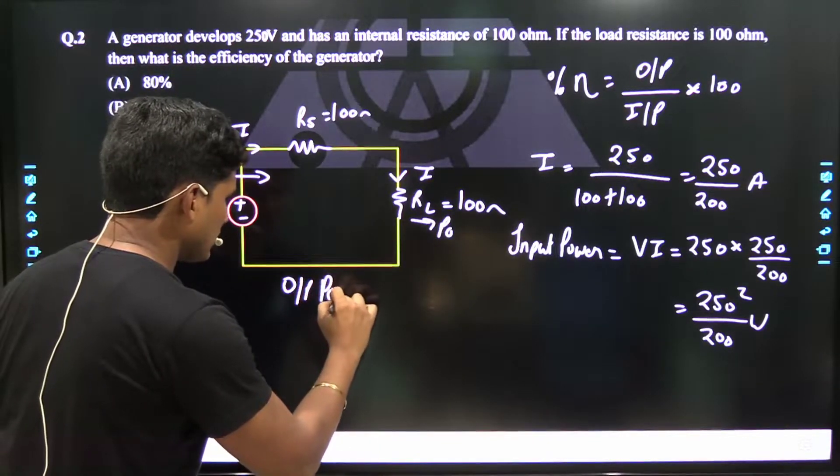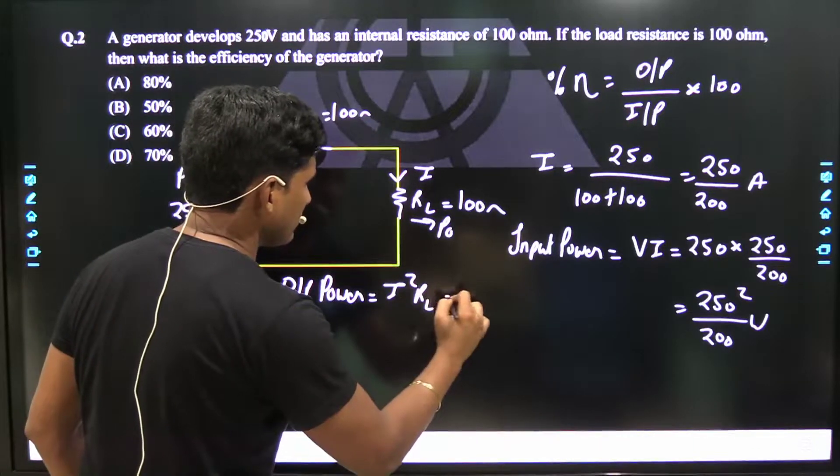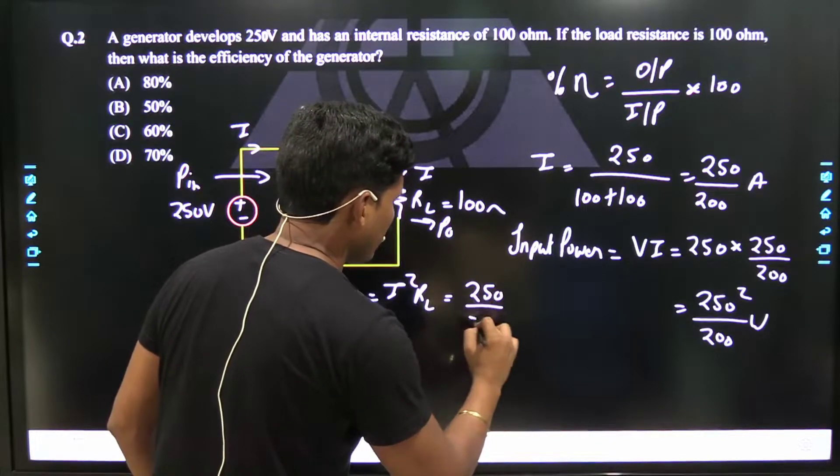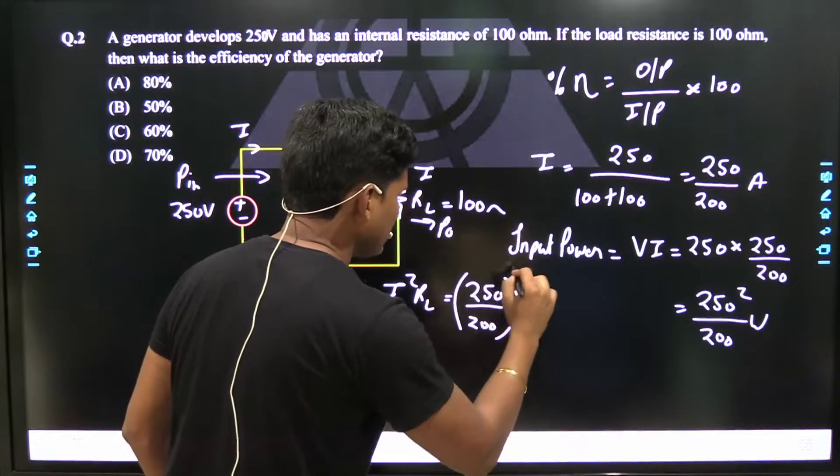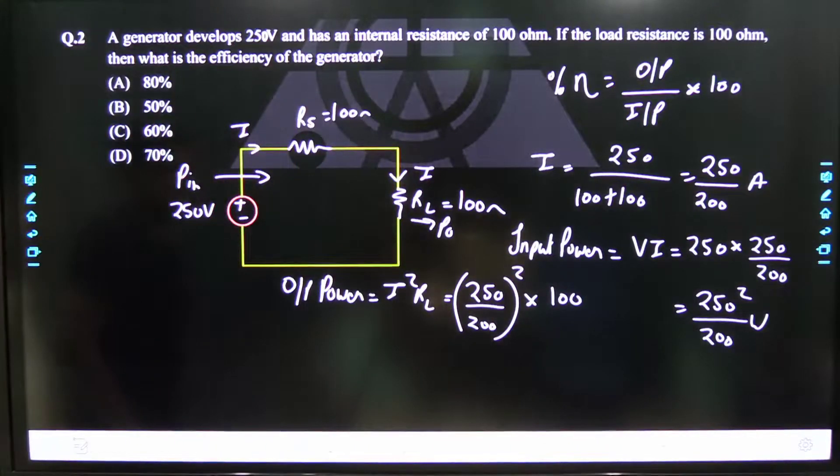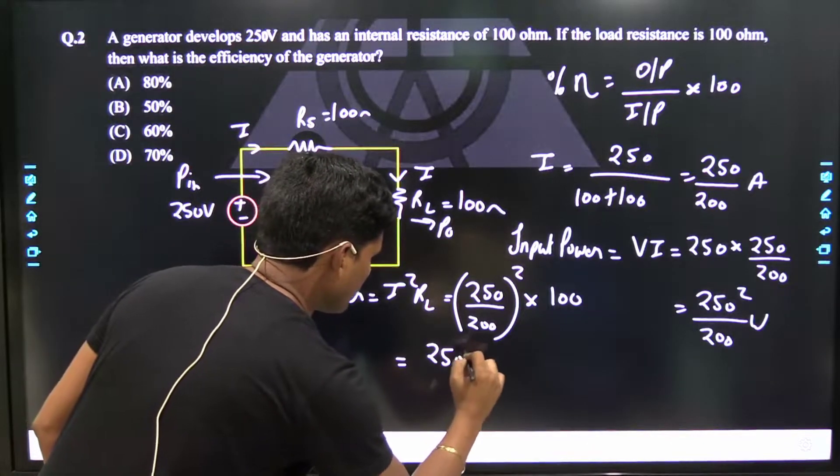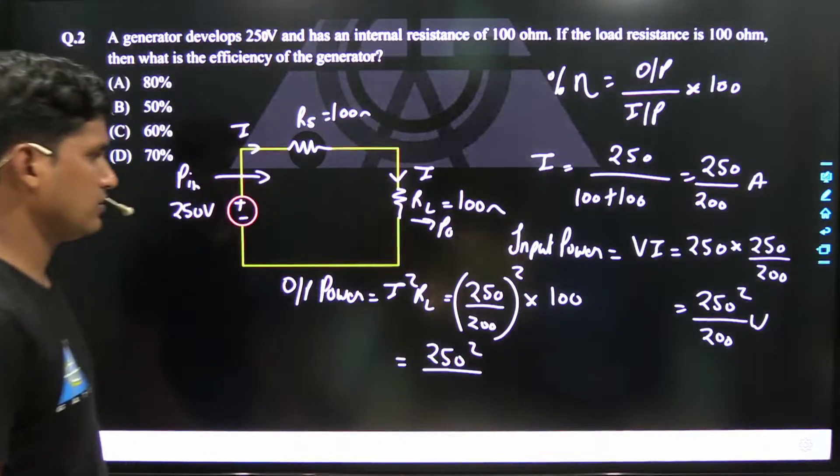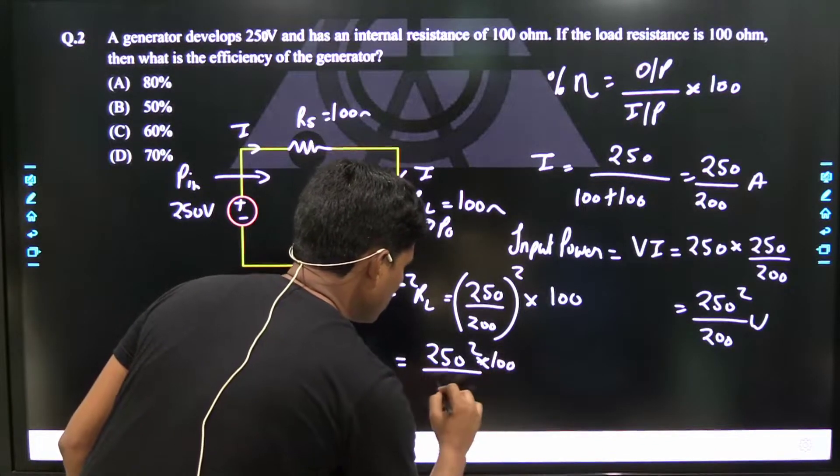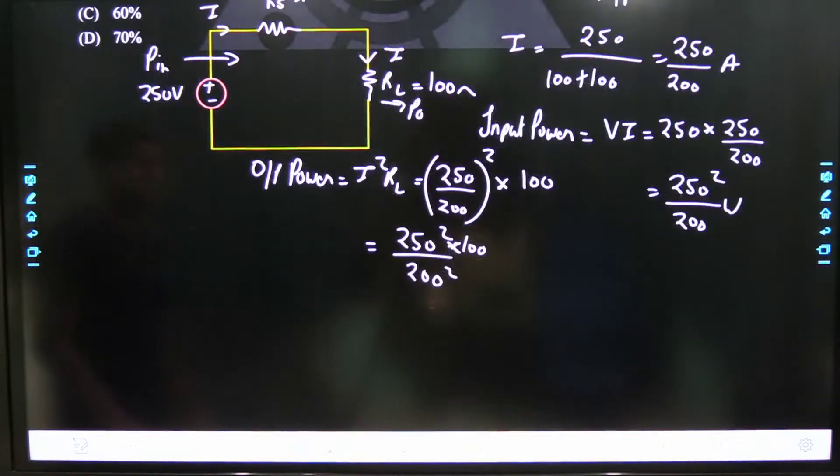Output power, that is equal to I square into RL. I square, that is 250 by 200 square into RL, that is hundred. This will be 250 square upon 200 square into 100.